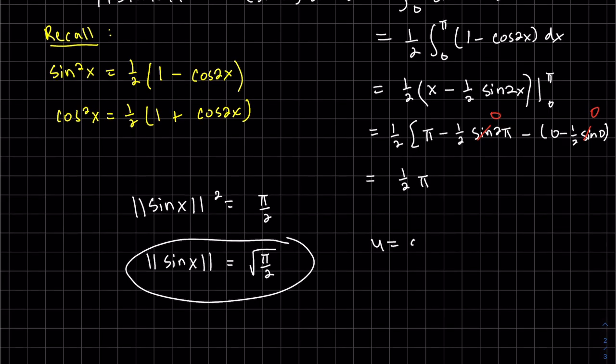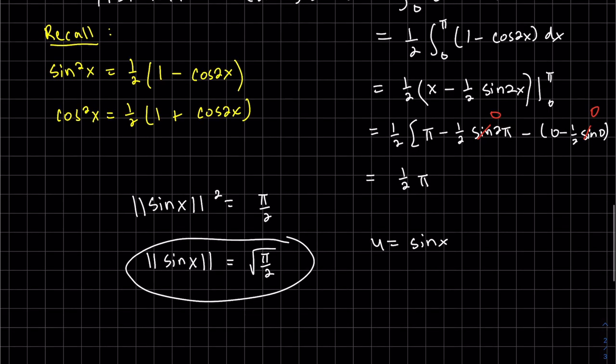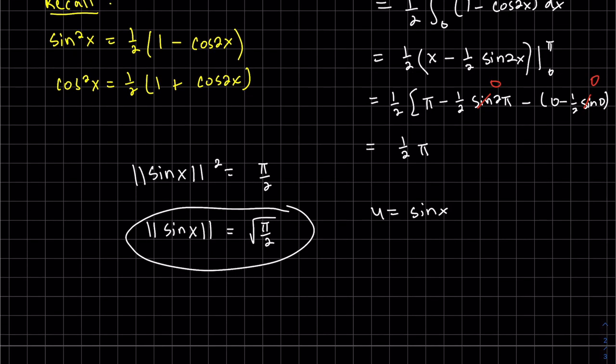Okay, so remember our u with sine of x. Recall, what if I wanted to make this a unit vector? Make a unit length? The unit vector was the unit vector was you took the vector and you divided it by its length.